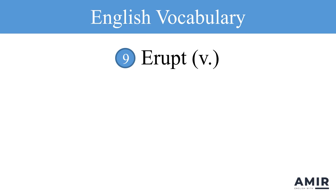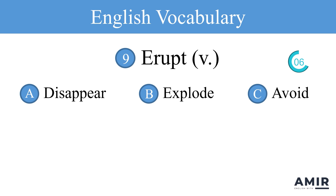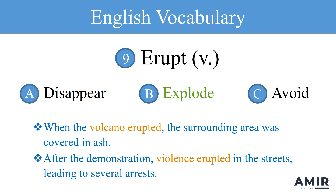Word number nine: erupt. The correct answer is explode. If a volcano erupts, that means it explodes and throws out lava, ash, and gas. For example: when the volcano erupted, the surrounding area was covered in ash. But erupt isn't only used for volcanoes — it can also mean to start suddenly and violently, especially in the context of conflict or violence. For example: after the demonstration, violence erupted in the streets, leading to several arrests.